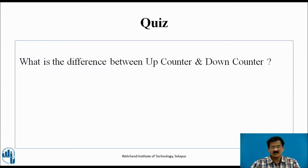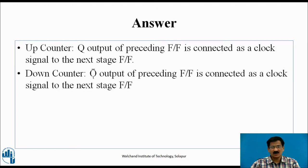The difference between up counter and down counter: In an up counter, the Q output of the preceding flip-flop is connected as the clock signal to the next flip-flop. In a down counter, the Q-bar output of the preceding flip-flop is connected as the clock signal to the next flip-flop.